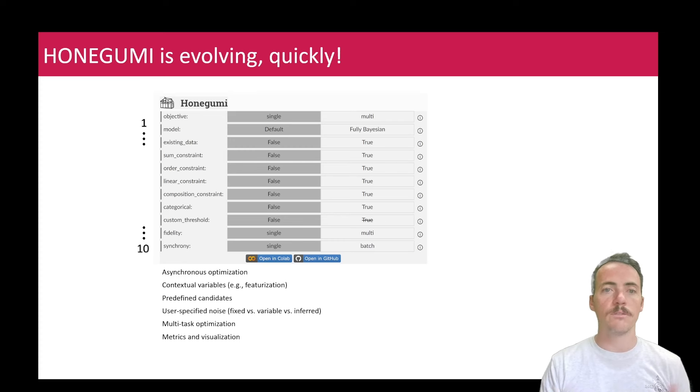And that said, as you saw on the website, we have more than just the six ones I showed you previously. We now have actually 10 different conditions, right? The model, the objective, whether or not you have existing data to start with. Is there a custom threshold where any solution has to be above or below a certain feature? Is it single fidelity or multi-fidelity? Is this going to be done in batches or not, right? Lots of stuff is already in place and it's evolving quickly.